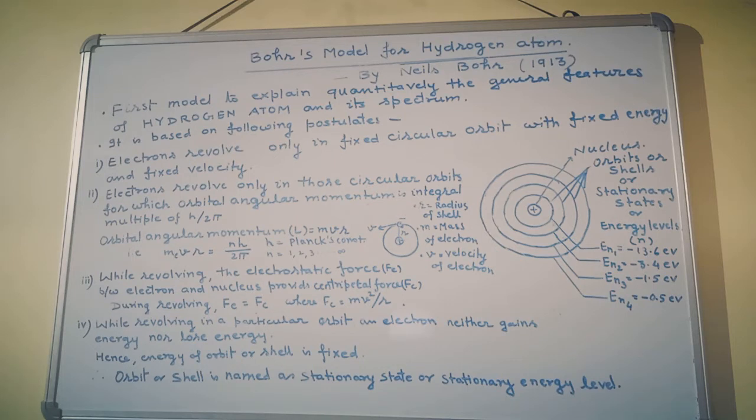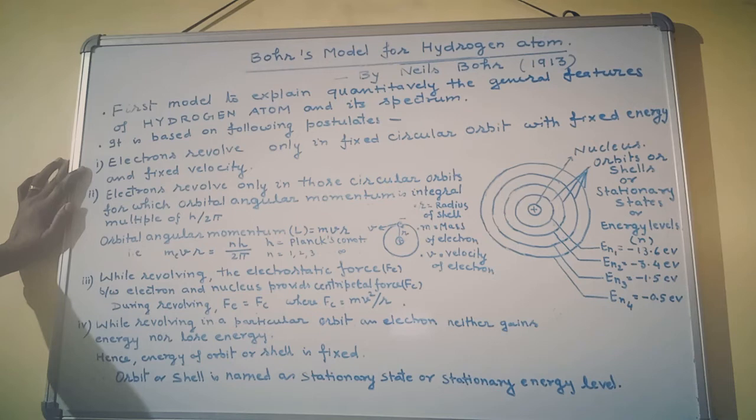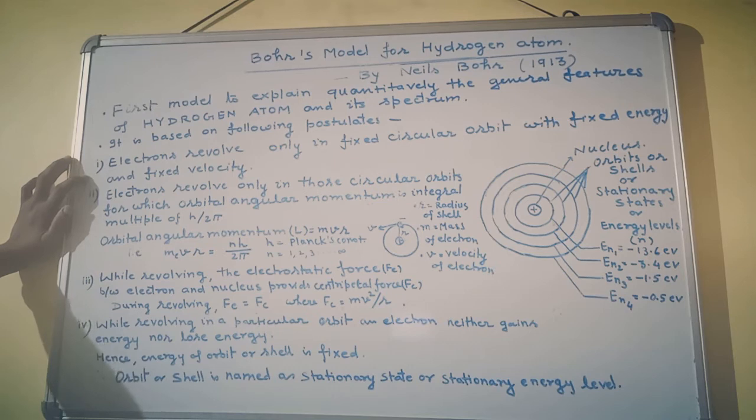This model explains quantitatively the general features of hydrogen atom and its spectrum. It is based on following postulates. Number one: electrons revolve only in fixed circular orbits with fixed energy and fixed velocity. The electron in a circular orbit revolves with fixed energy.